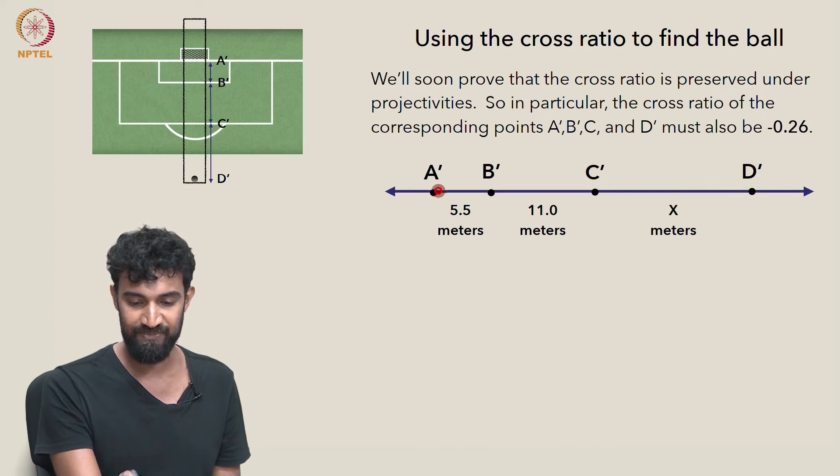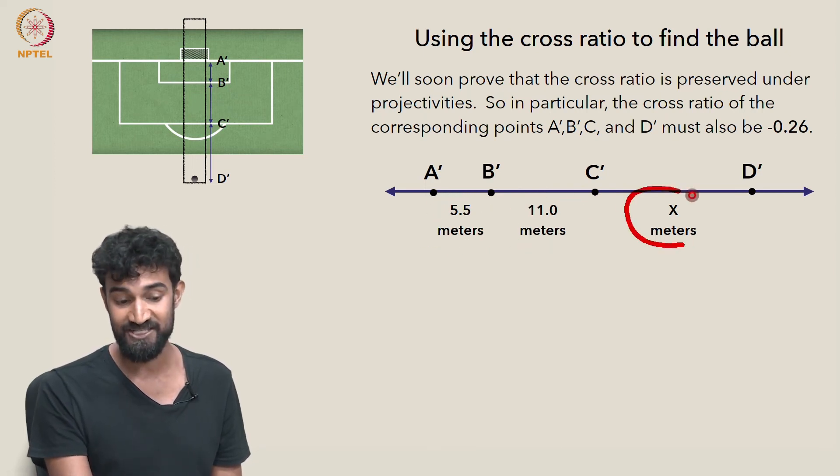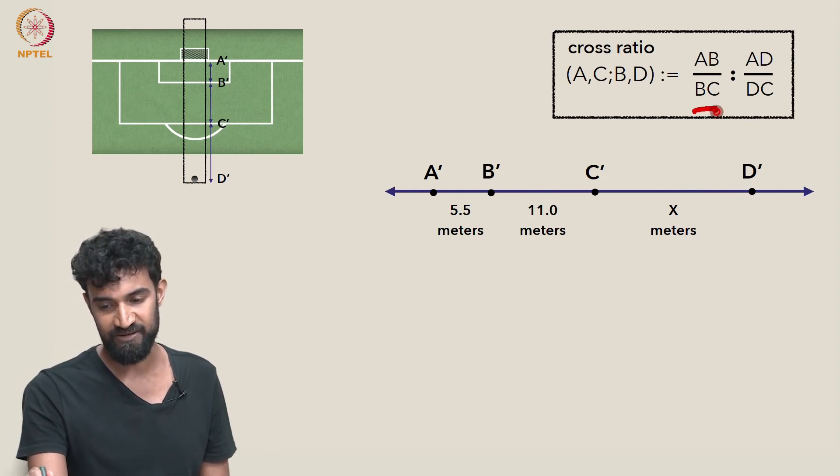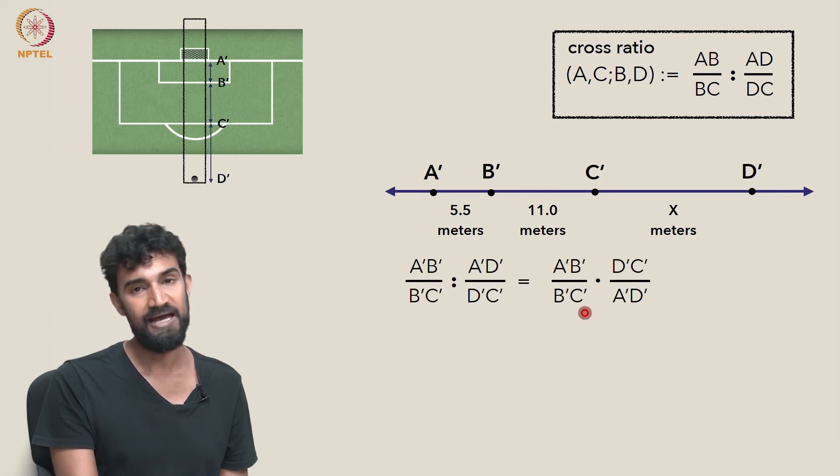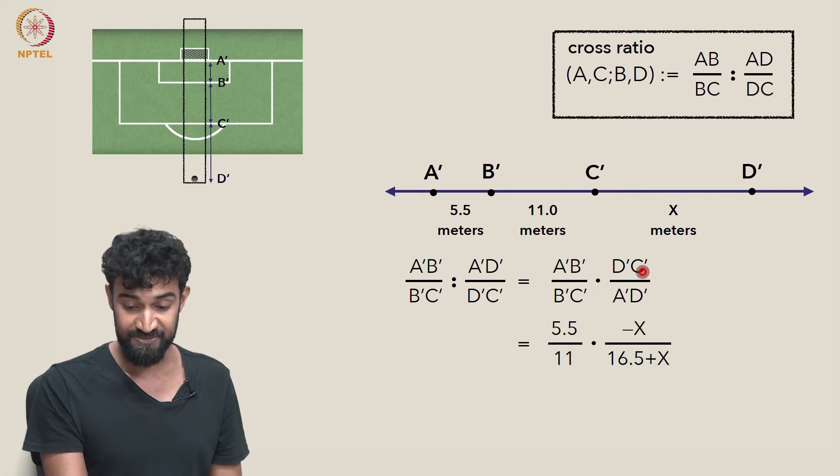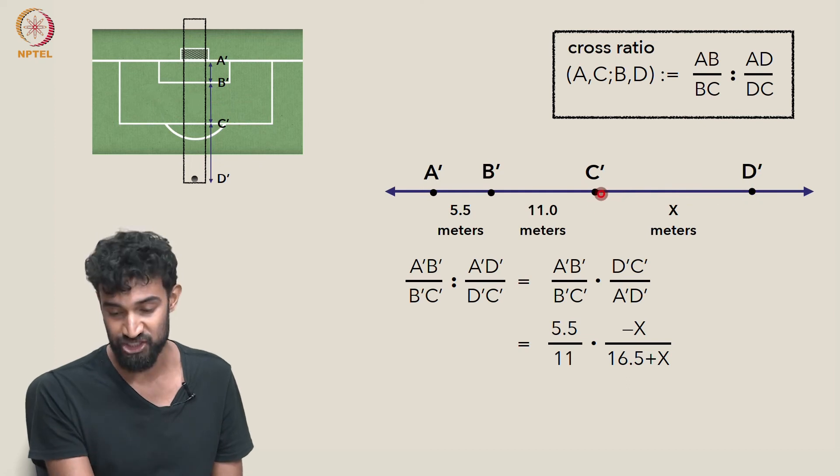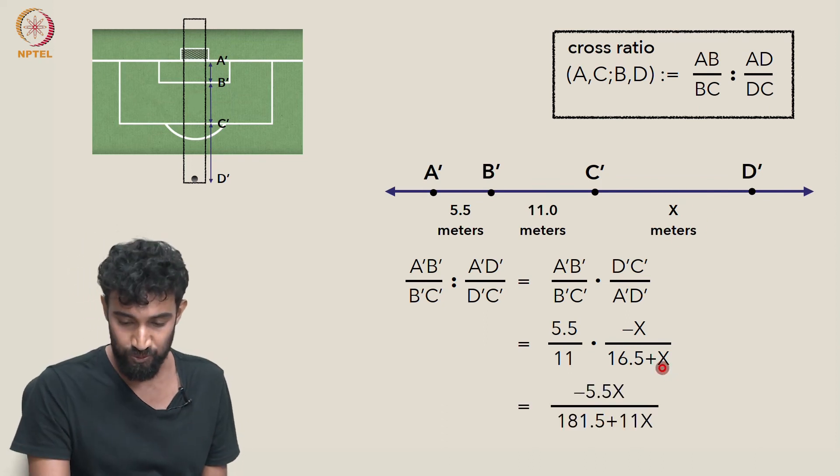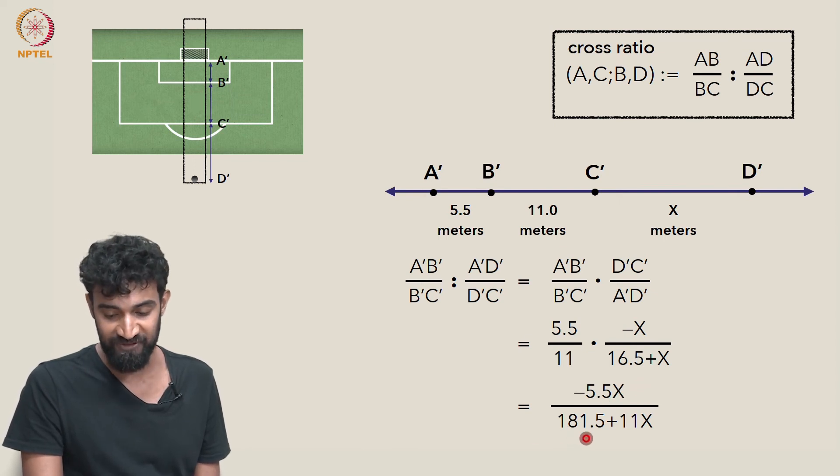So now let's look at the points A prime, B prime, C prime, and D prime. We know that this distance is 5.5 meters. This is 11 meters. And this is the distance from the ball to that first line that's going to be X meters. So the cross ratio, AB over BC divided by AD over DC, in this case, we'll apply it to A prime, B prime, C prime, and D prime, and do the same calculation. We first flip this second fraction to get D prime, C prime, over A prime, D prime. And then substitute in, A prime, B prime is 5.5 meters. B prime, C prime is 11 meters. D prime, C prime, that's going to be negative, because it's a signed distance and it's going in the wrong direction. So that's negative X meters. Finally, the sum, A prime up to D prime, is 5.5 meters plus 11 meters, 16.5 meters, plus X meters. So we get that. So multiplying that together, we get negative 5.5X over 181.5 plus 11X.